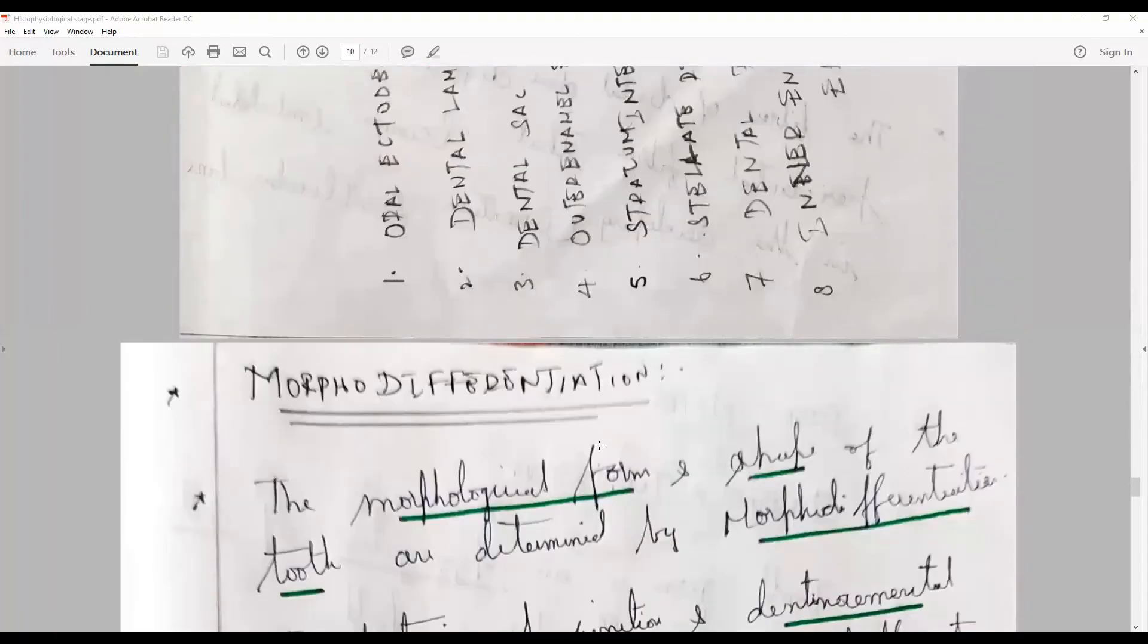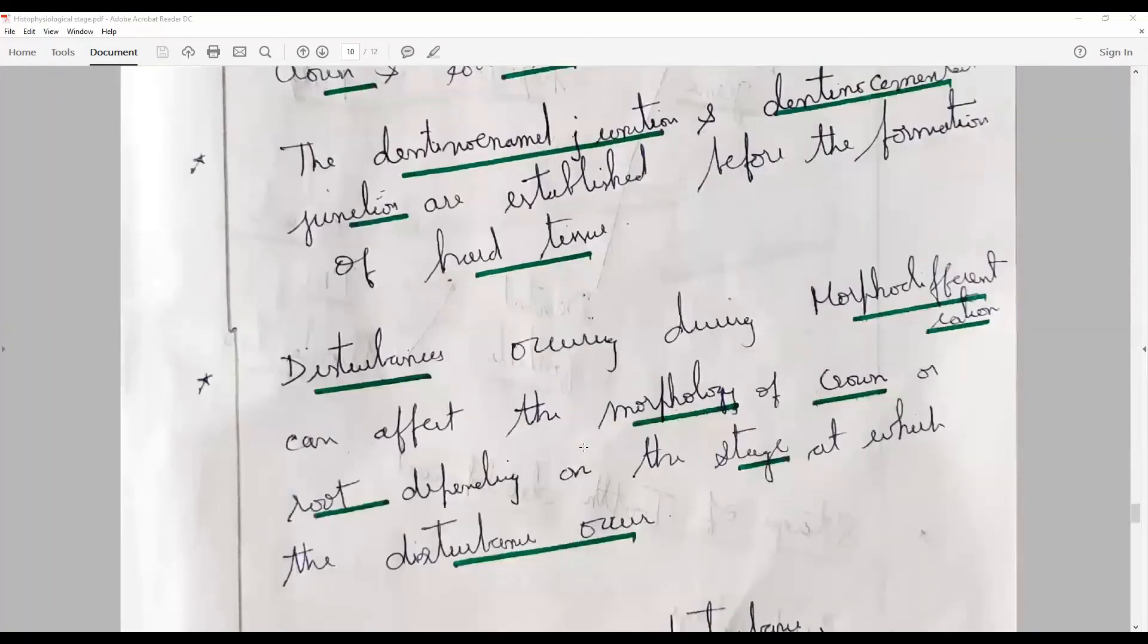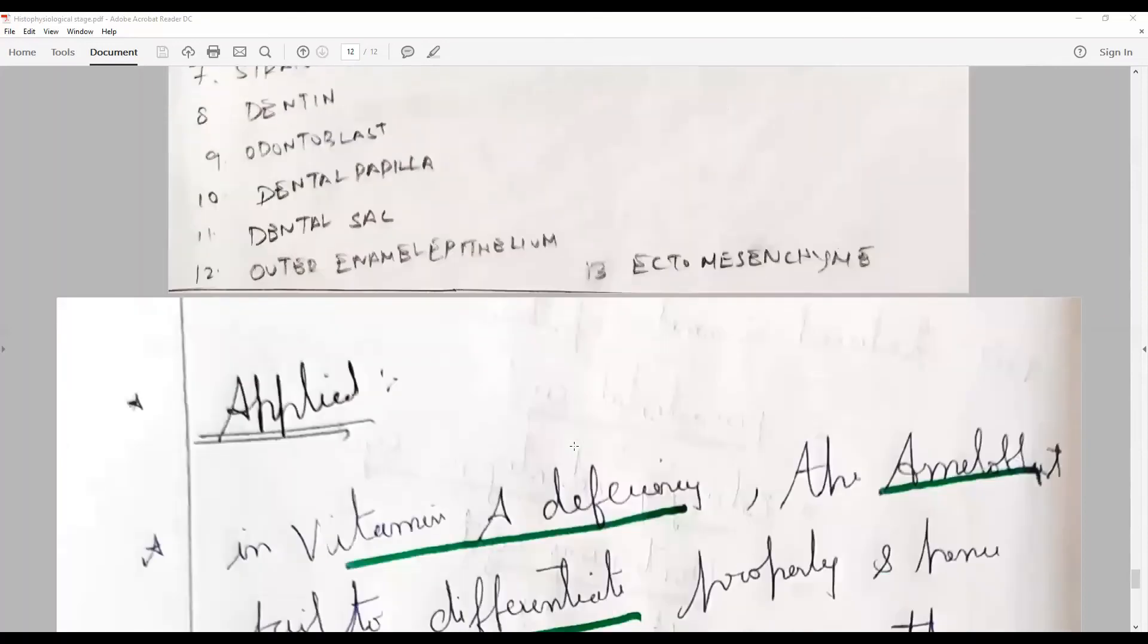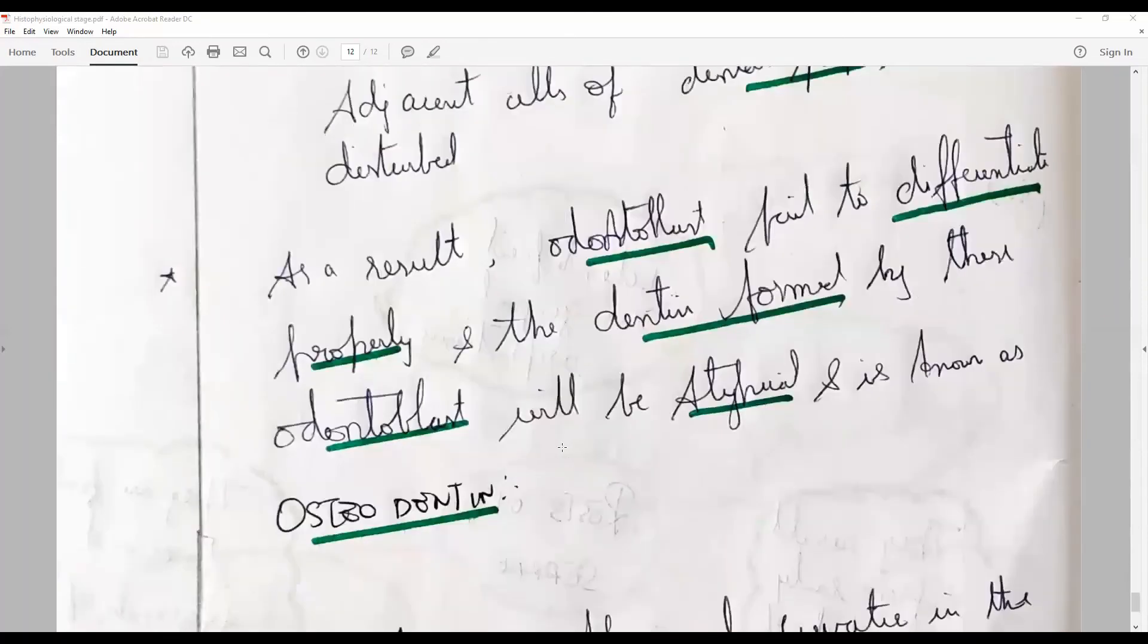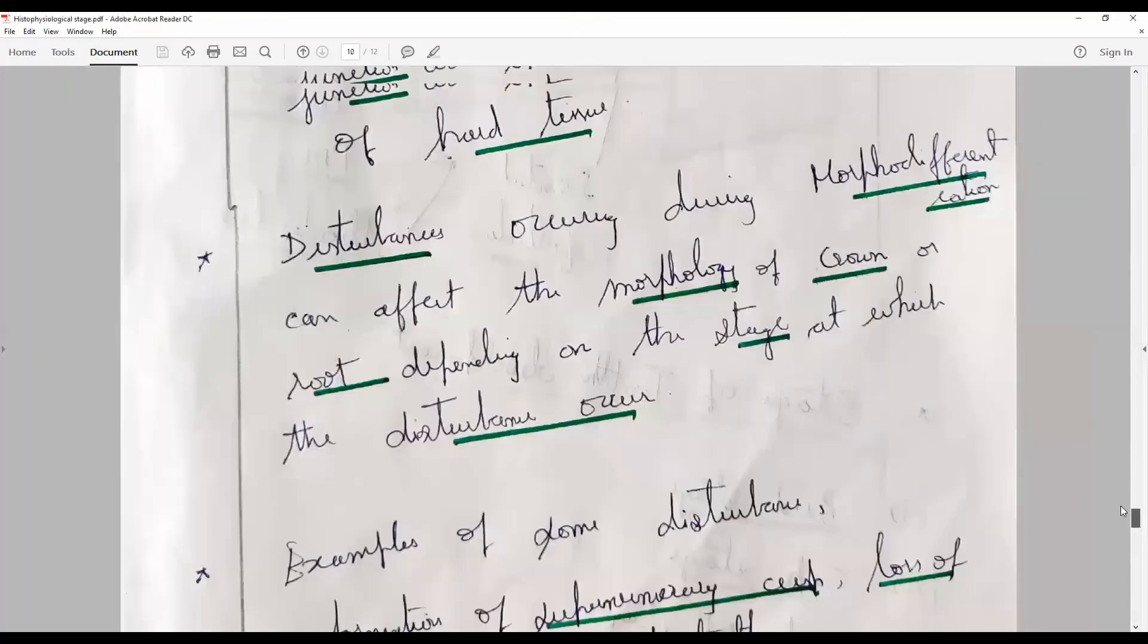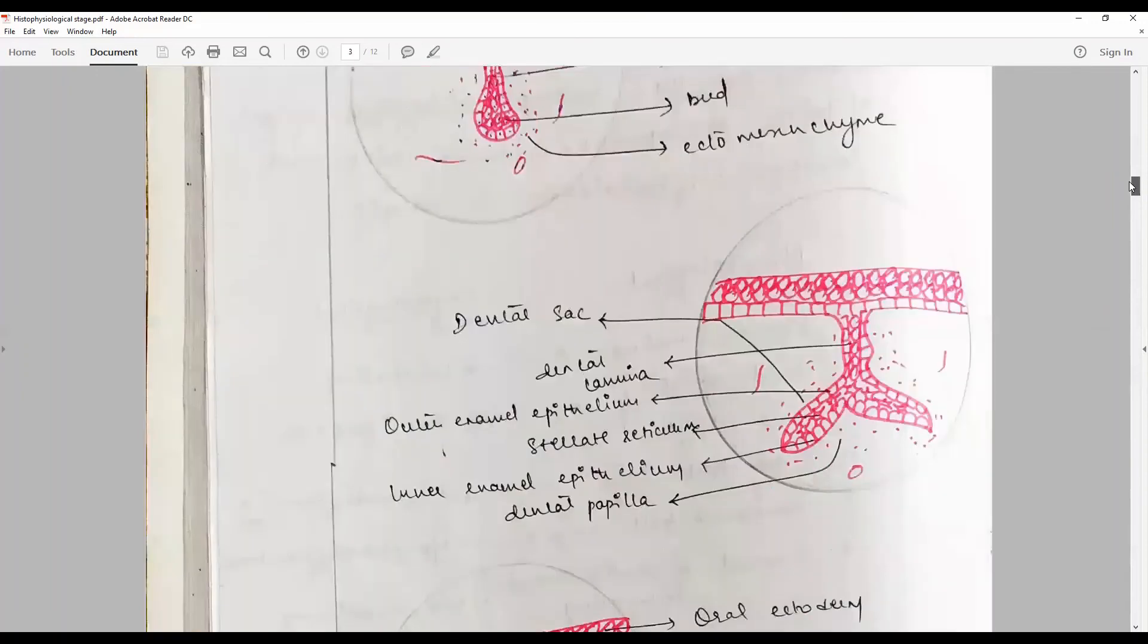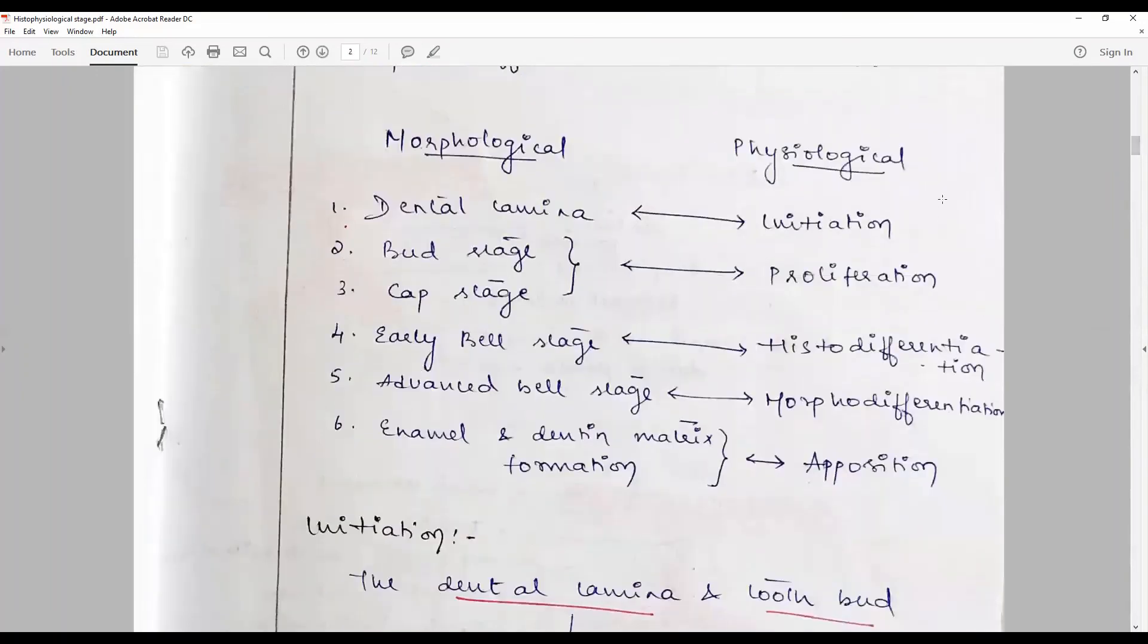Morpho differentiation: this is how you proceed to write your answer for the histo differentiation. Diagrams make a big difference in your answer sheet and applied, I stress upon, will help you to attract and score better. This is the type how you approach a question on histophysiological stages of tooth development and correlation. This is very important.